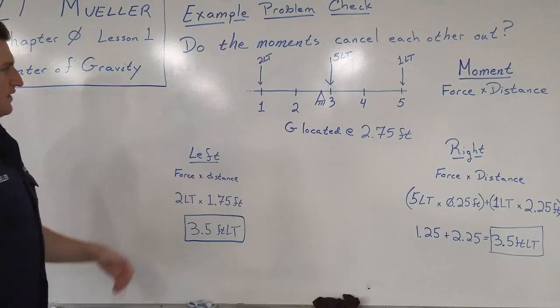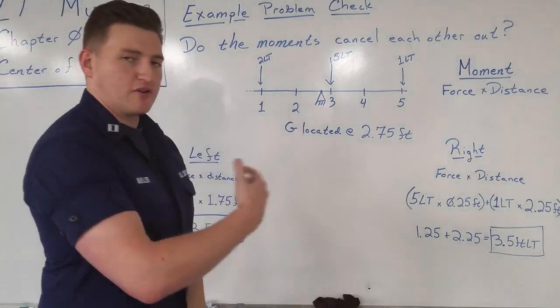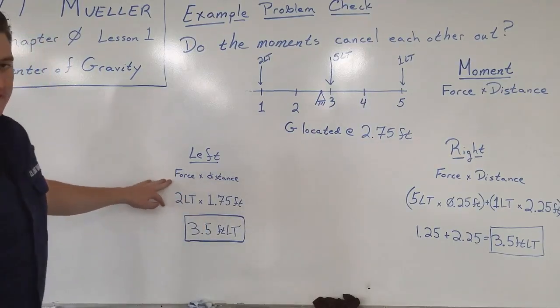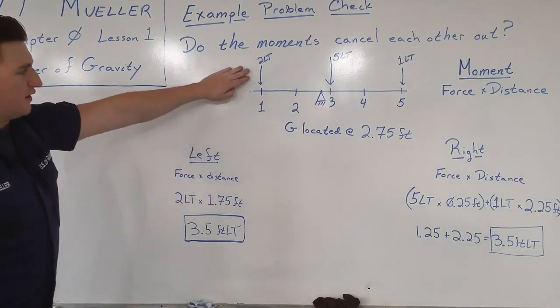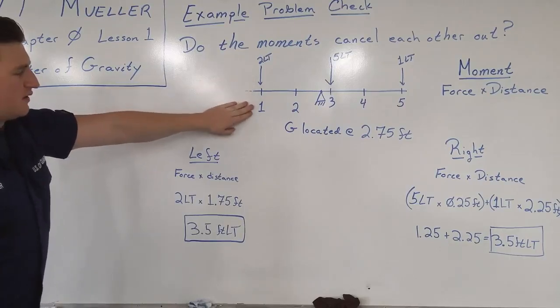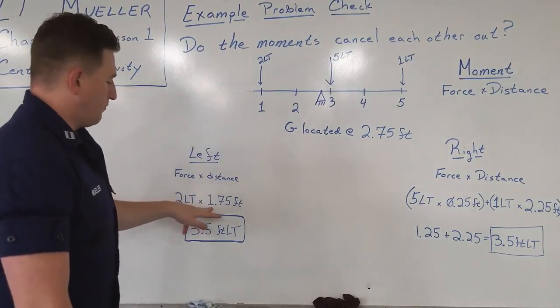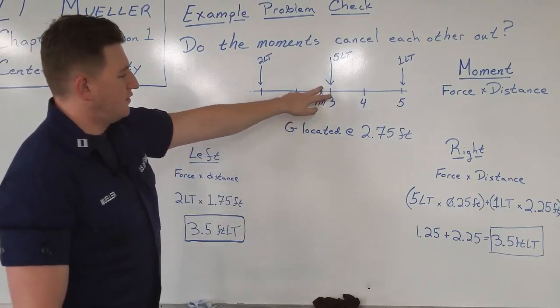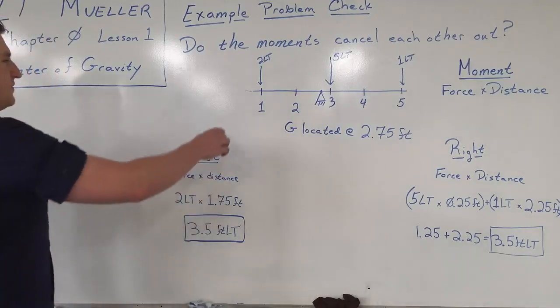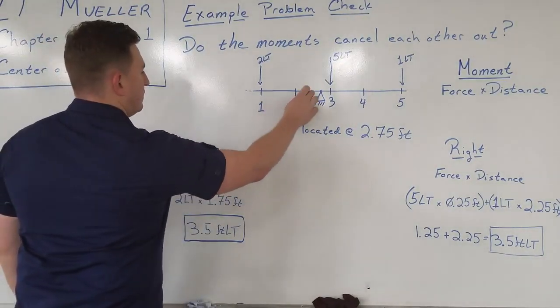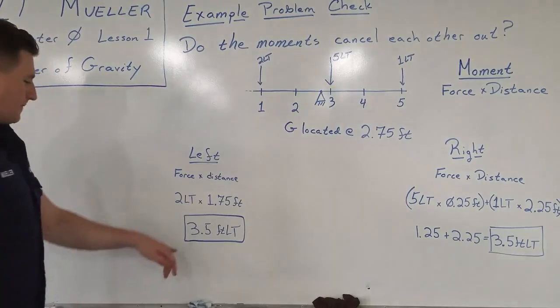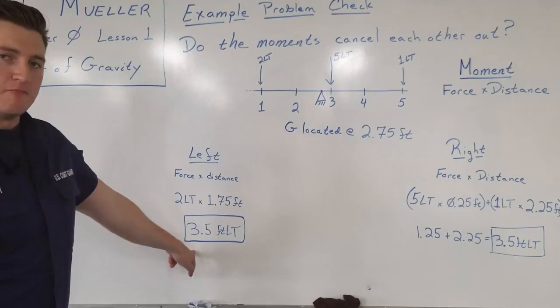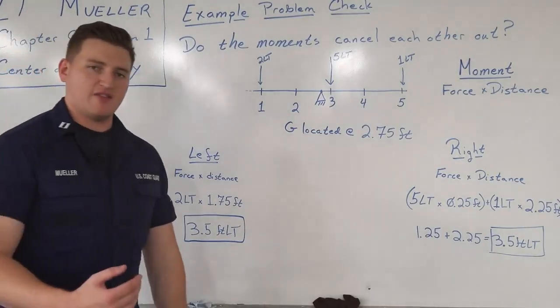So now let's look at the left side. This is everything that's trying to make the system spin counterclockwise along this pivot point. So we know that a moment is just a force times a distance. We have a force of two long tons, but instead of using the R for the arrow, we use 1.75. 1.75 being the distance from the force to the pivot. So you have 1 foot, and then from 2 to 2.75. So you have 2 times 1.75, and we have 3.5 foot long tons. Moments are always expressed in units of length times a force.